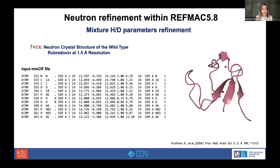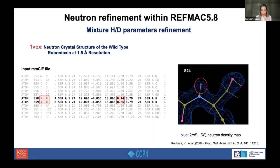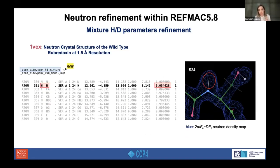To test the new implementation, we performed a re-refinement of the neutron crystal structure of wild-type rubredoxin at 1.5 Ångström resolution. Prior to refinement, the mmCIF file shows the occupancy representing the partially exchanged hydrogen and deuterium in the structure. After refinement, we obtain a single value representing the fraction of hydrogen atoms in the structure. If the hydrogen atom is fully exchanged, for example, the occupancy will be equal to 0.